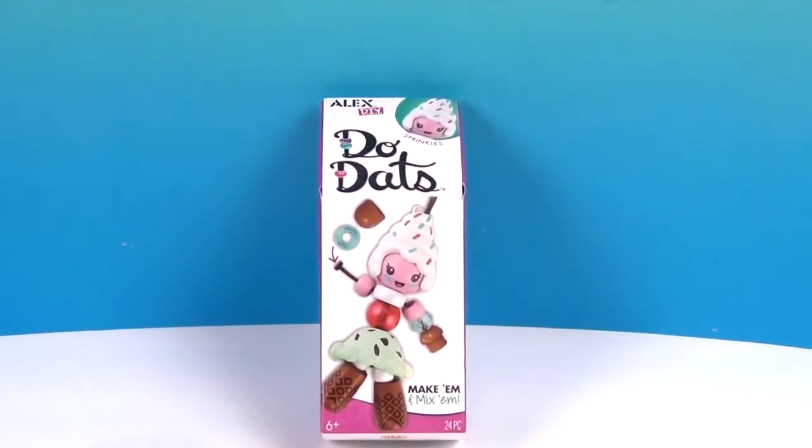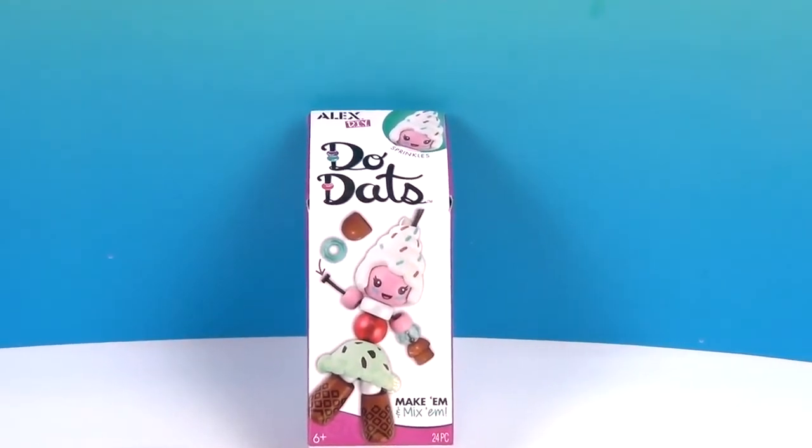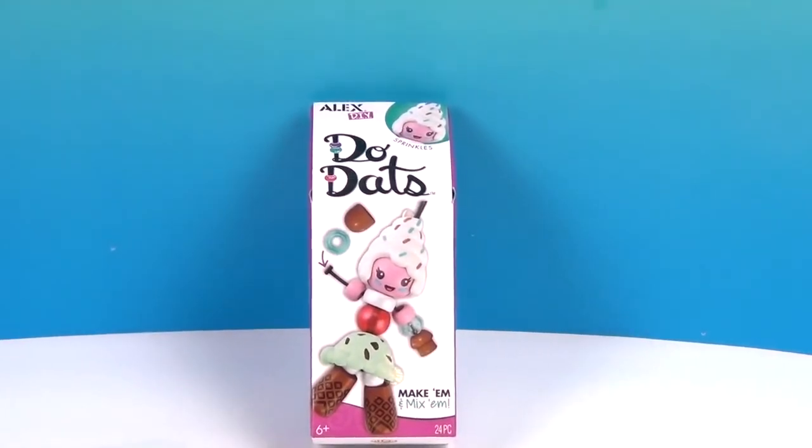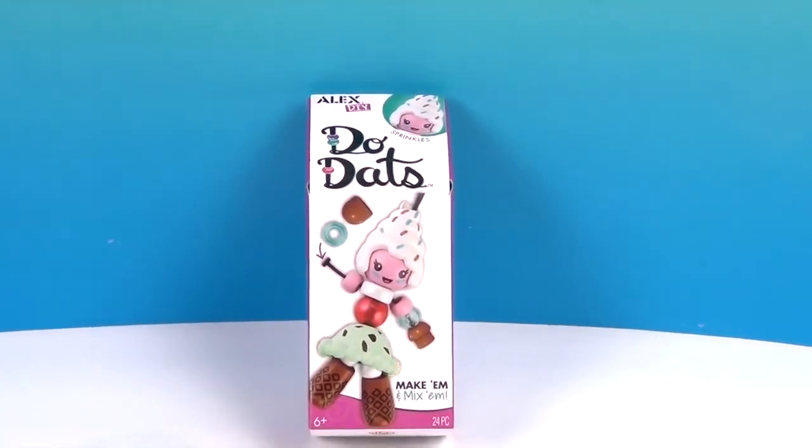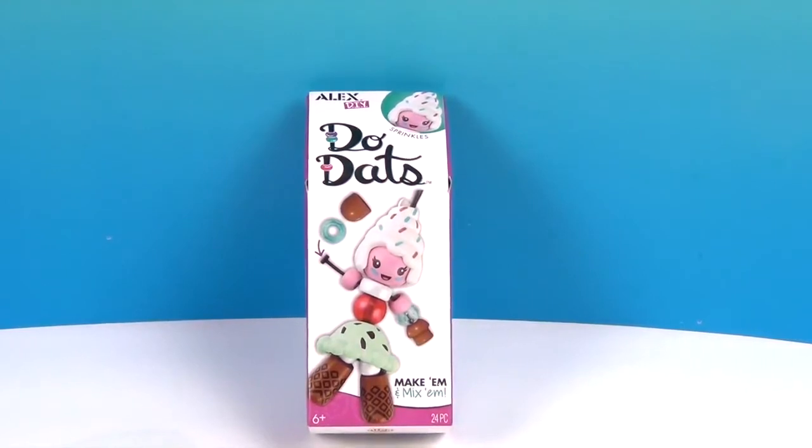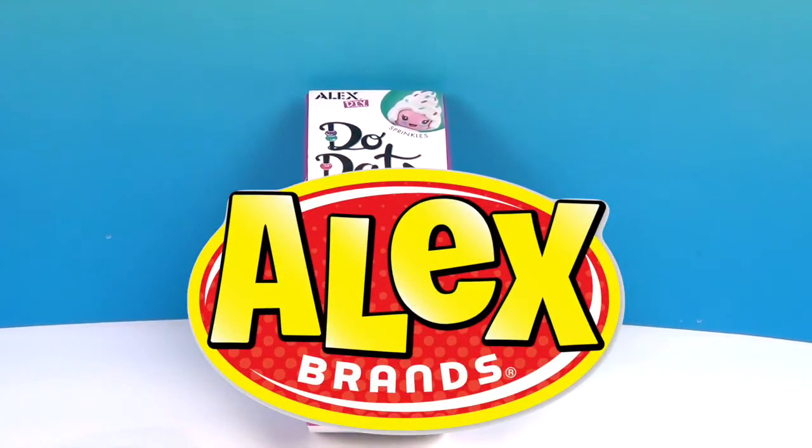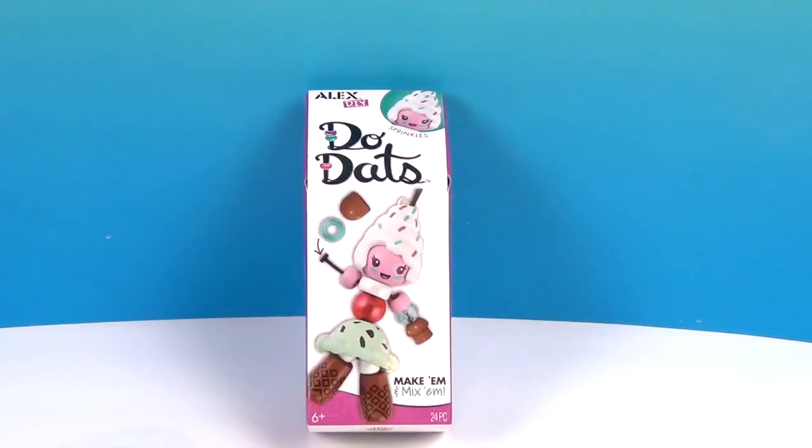So this is a little figure that you make out of beads and it looks like some sort of string or something that holds it together. I guess we'll find out when we open it up. But these are an Alex DIY product and we want to say a great big thank you to Alex Brands for sending this to us to share with you. We're very excited to make this doodad.